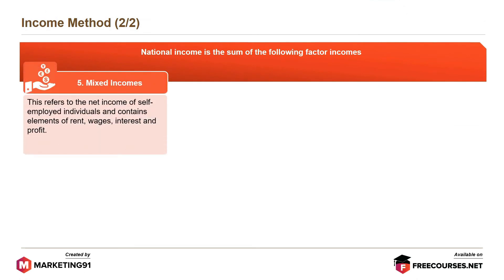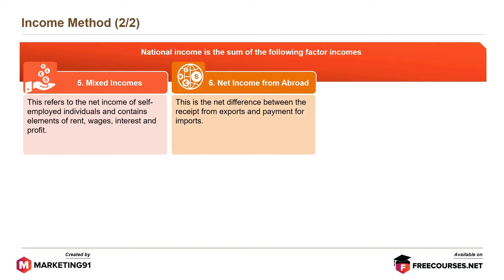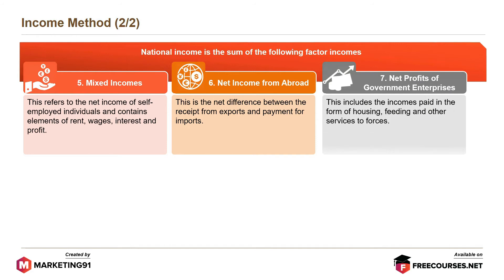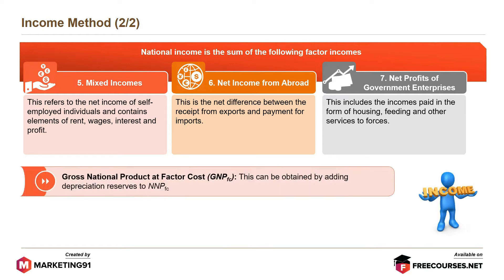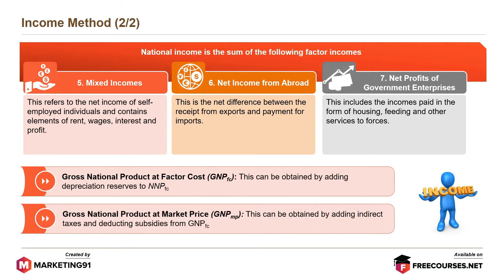Mixed incomes refers to the net income of self-employed individuals and contains elements of rent, wages, interest and profit. Net income from abroad is the net difference between the income received from exports and payments for imports. Net profits of government enterprises includes the incomes paid in the form of housing, feeding and other services to forces. GNPFC can be obtained by adding depreciation reserves to NNPFC. GNPMP can be obtained by adding indirect taxes and deducting subsidies from GNPFC.